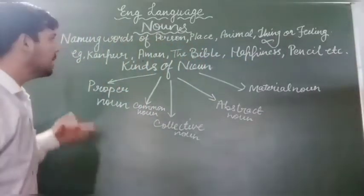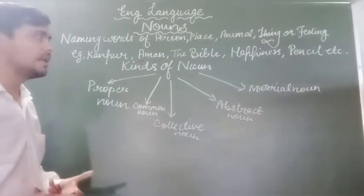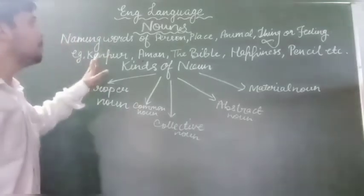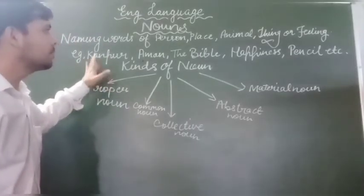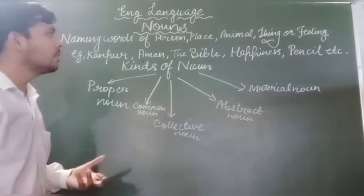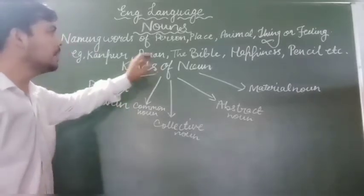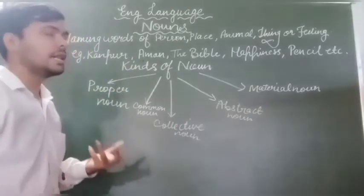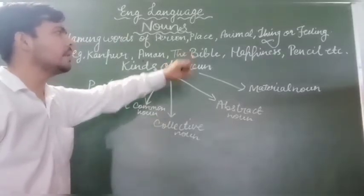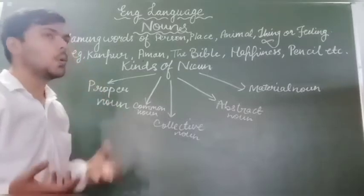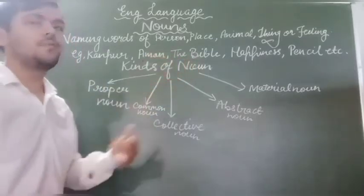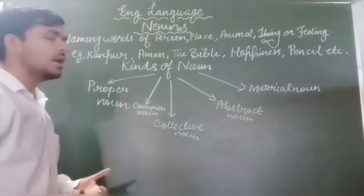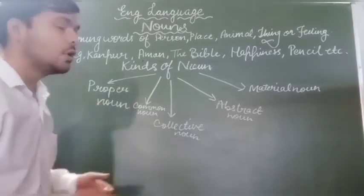तो आप देखिए कि मैंने कुछ words लिखे हैं जो noun के बारें में person, place, animal, thing या feeling का names बता रहे हैं। Places की names — Kaanpur। Person का name — Aman। Animal का name — Lion, Tiger, Giraffe। Thing — The Bible, जो Christians की holy book है, फिर Pencil। और feeling — Happiness।